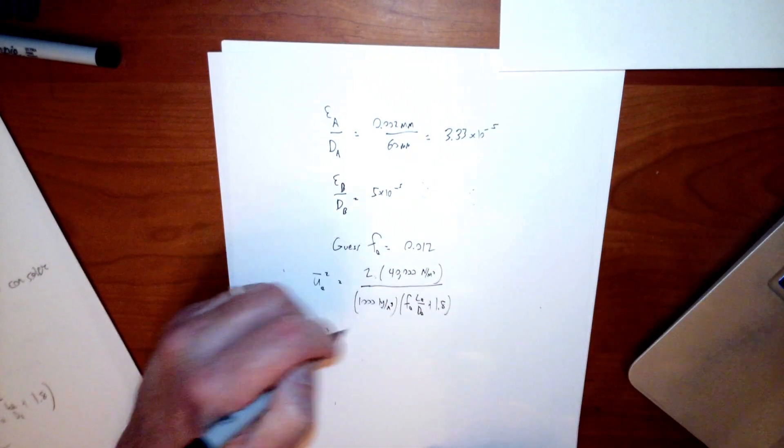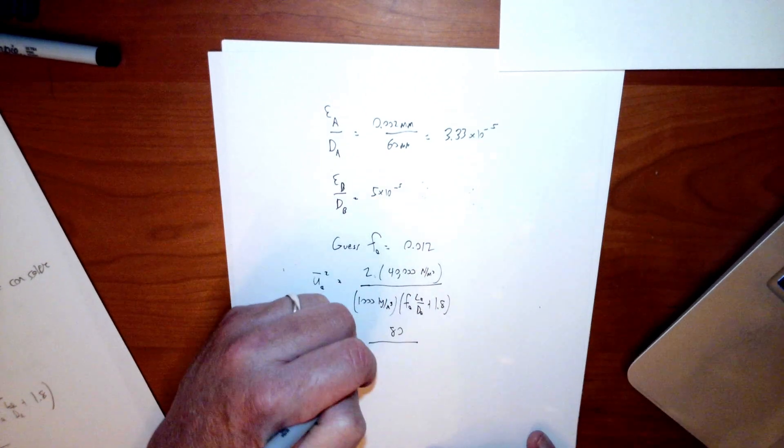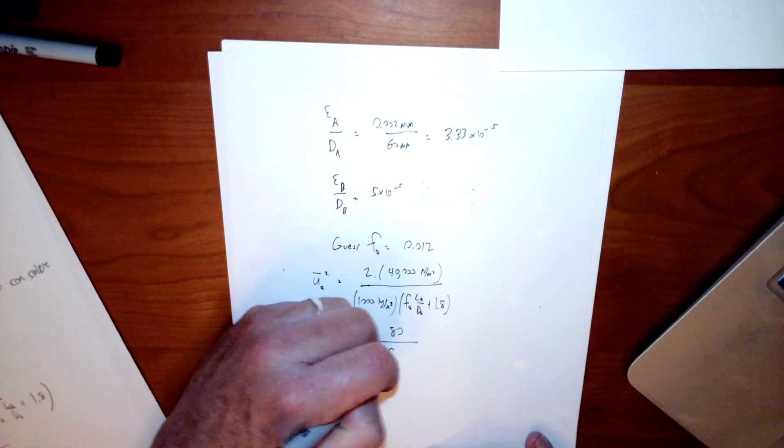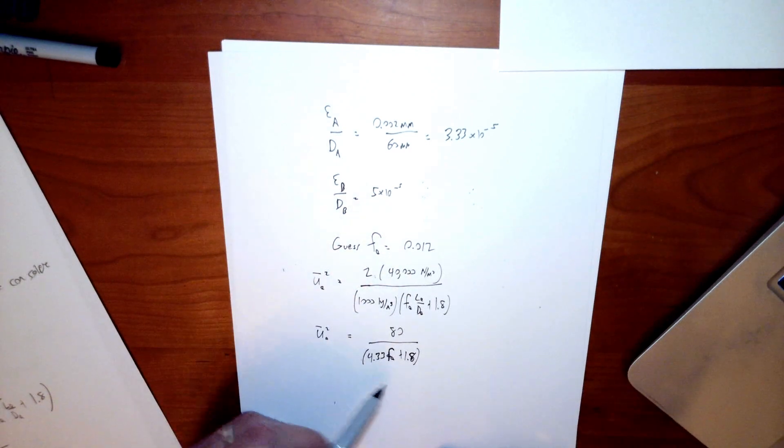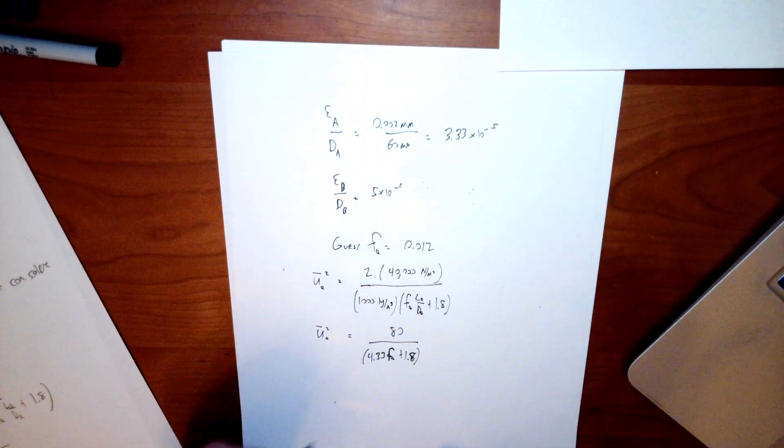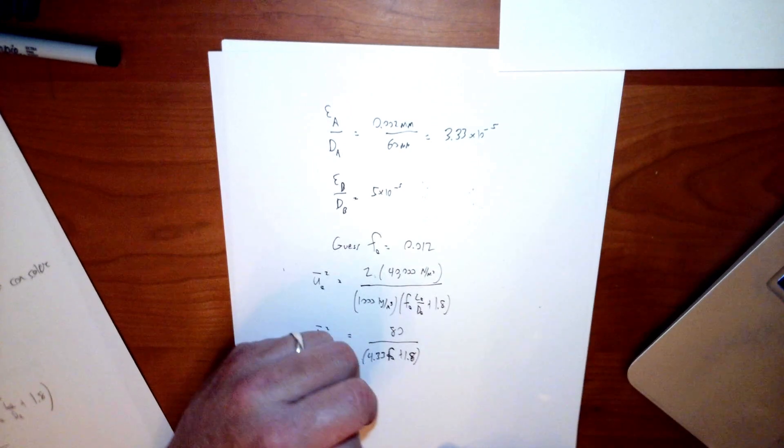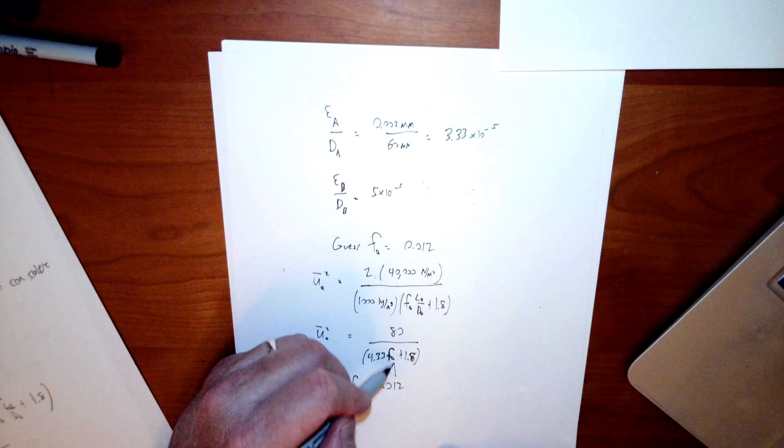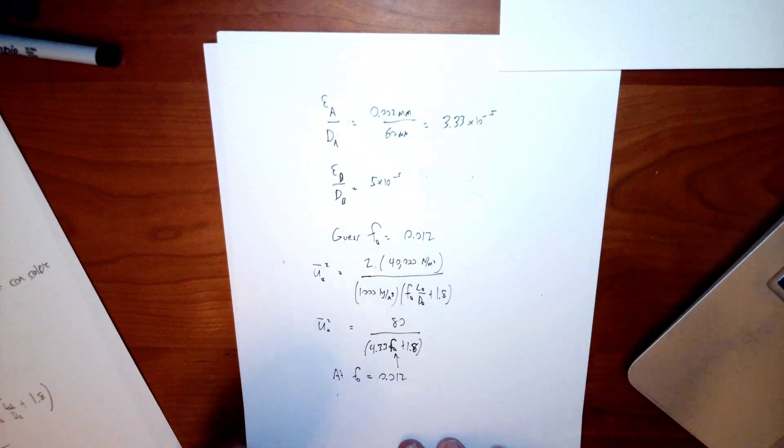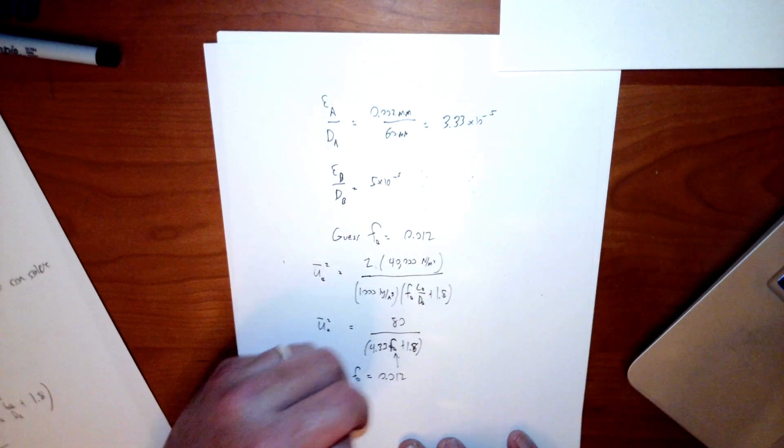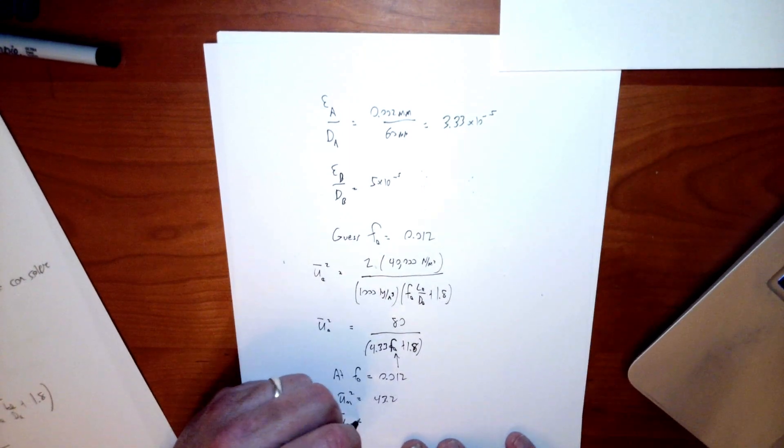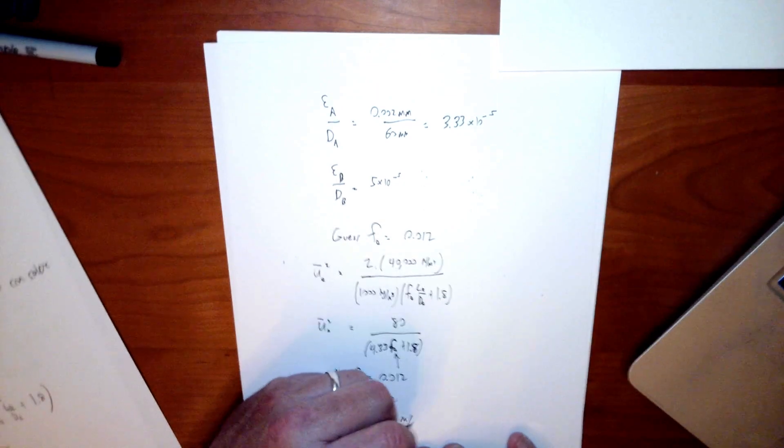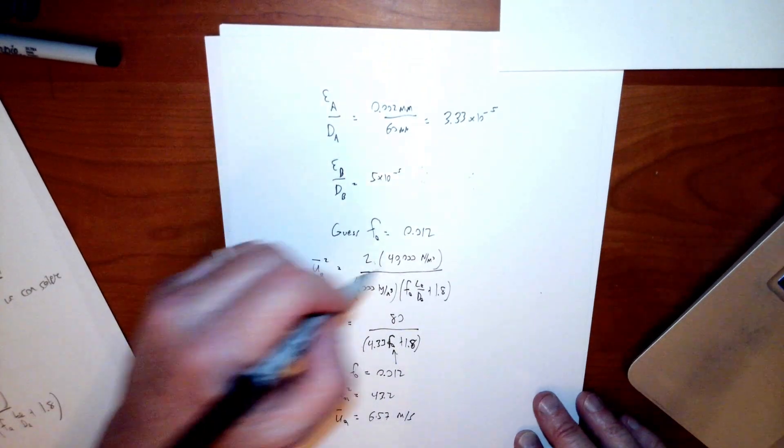So if I plug all that stuff together, I get the UA squared and start plugging in numbers, I get 80 over 4.33 times FA plus 1.8. So that's my simplified expression where I plugged in all my numbers for the U as a function of FA. I've guessed that FA equals 0.012. So I'll go ahead and say FA equals 0.012. I plug that in for my FA right there. And I get an answer for U squared. So UA squared is equal to 43.2, which means that UA for that guess is 6.57 meters per second. So that's my result if I guess F equals 0.012.